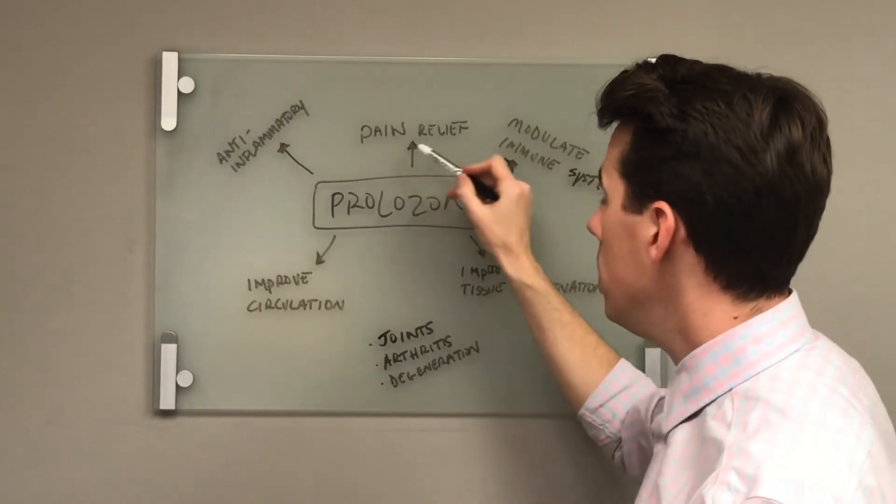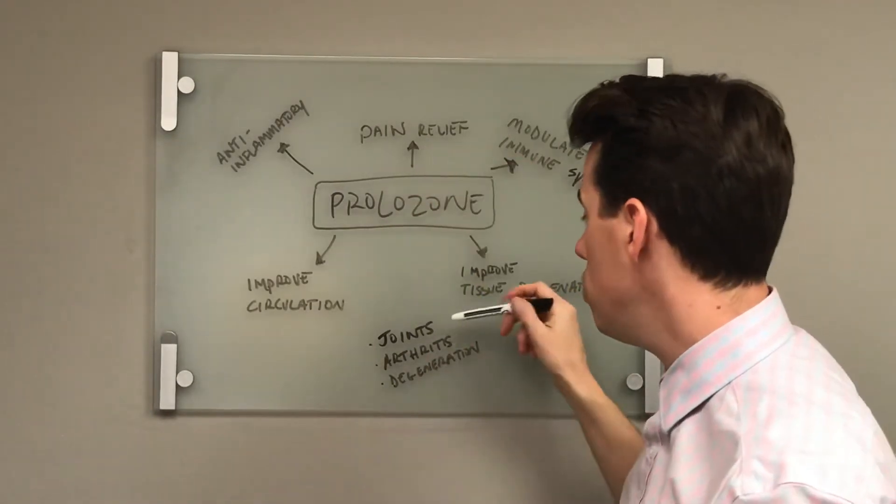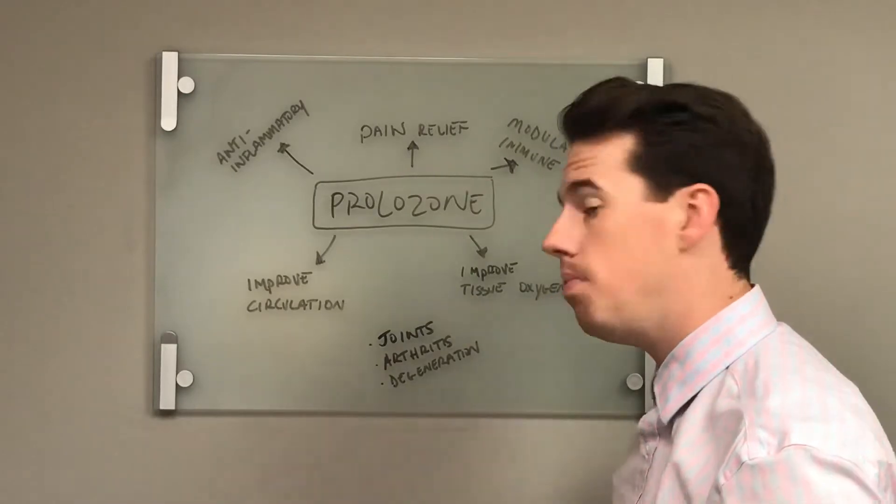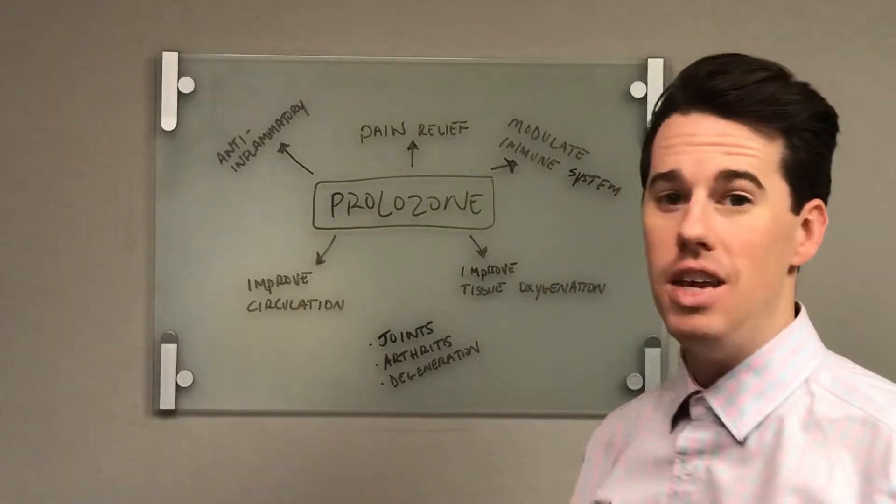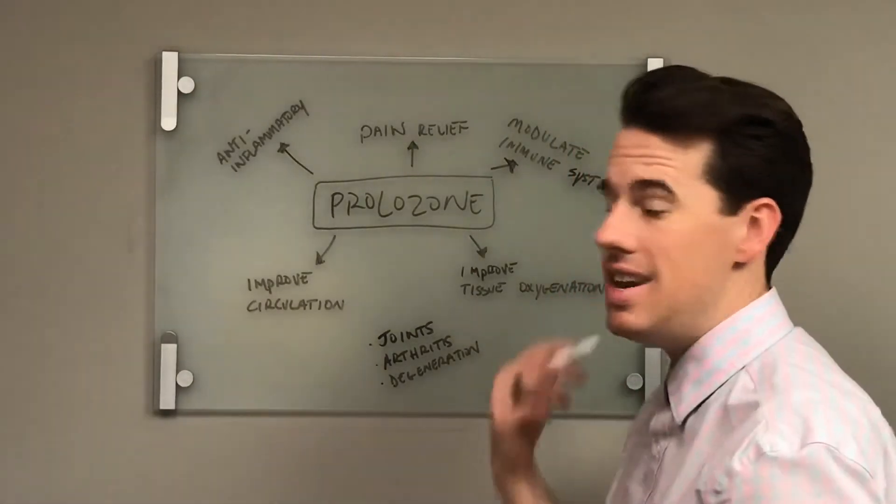So, like I said, Prolozone can be a permanent pain relief solution for joint pain, for arthritis, and degeneration. The most common areas that we treat are knee pain, back pain, shoulder pain, and neck pain.